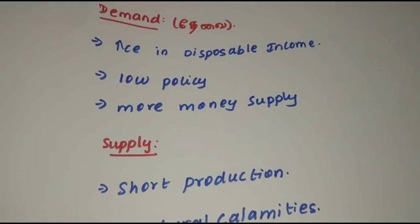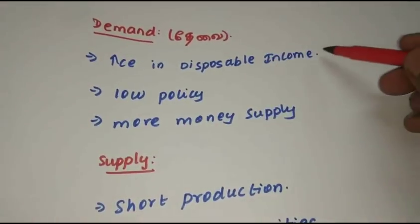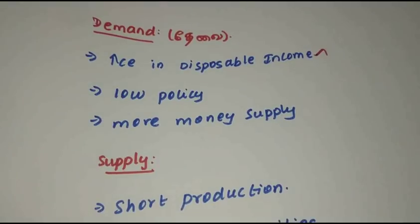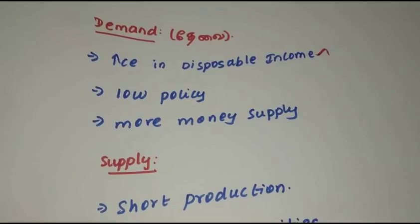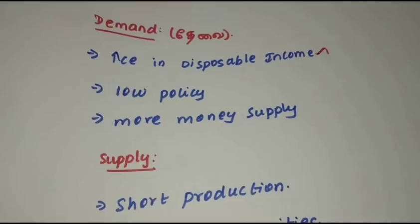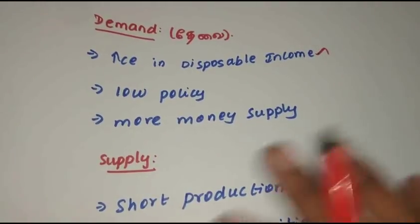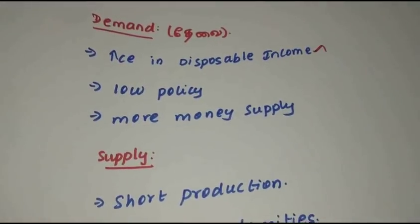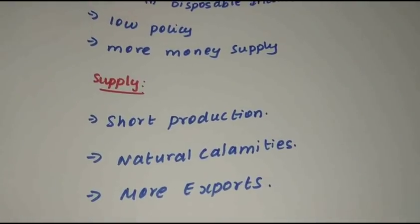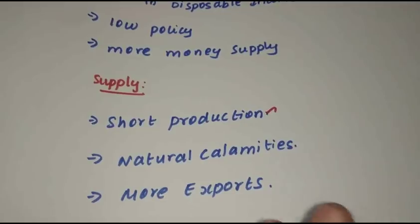Demand and supply — if demand decreases, inflation is less. First, increase in direct tax reduces disposable income. If disposable income increases, demand will increase. The monetary policy is cheaper and less restrictive. We can use cost control. More money supply increases inflation; less money supply reduces it. Short production also plays a role — supply shortages increase inflation.